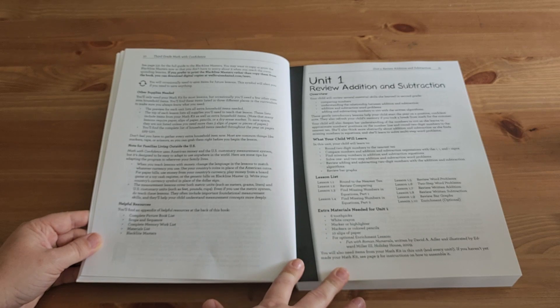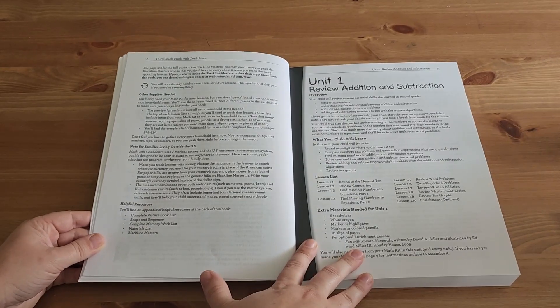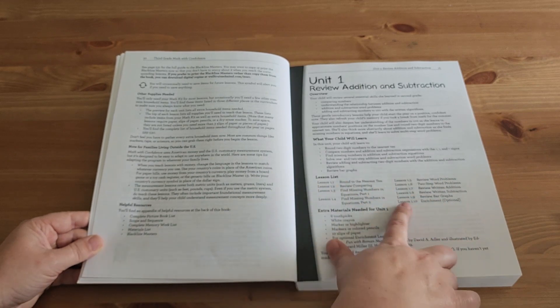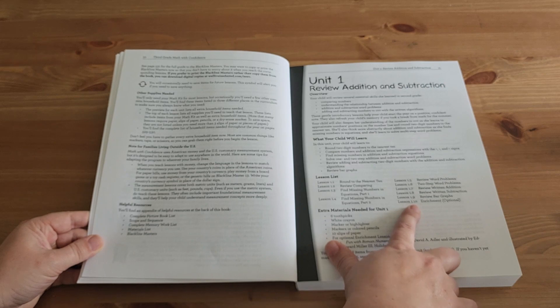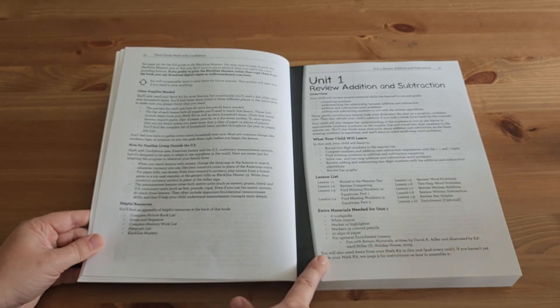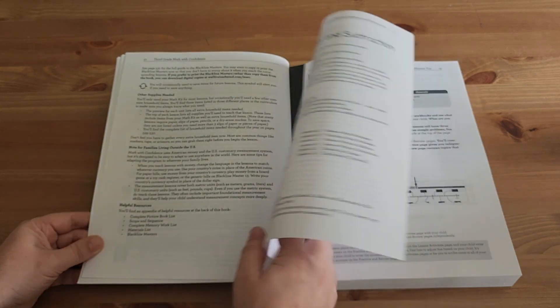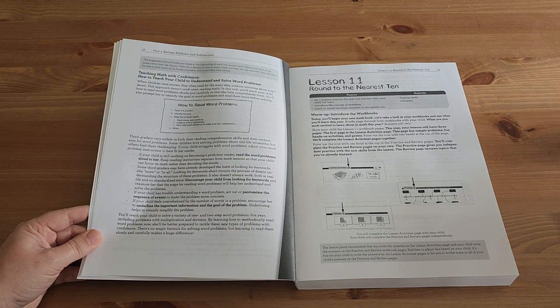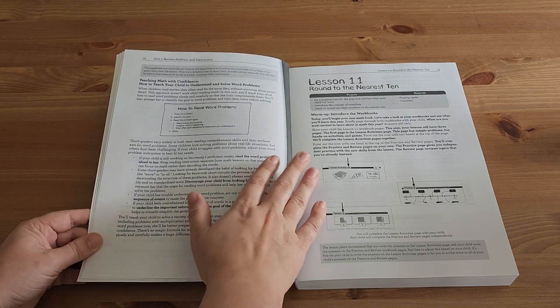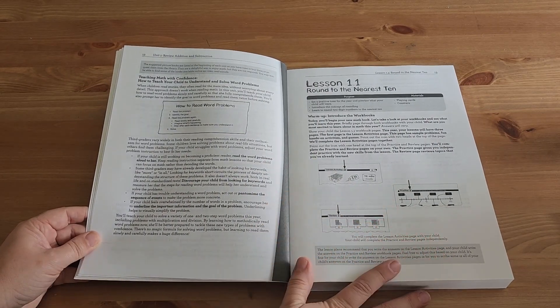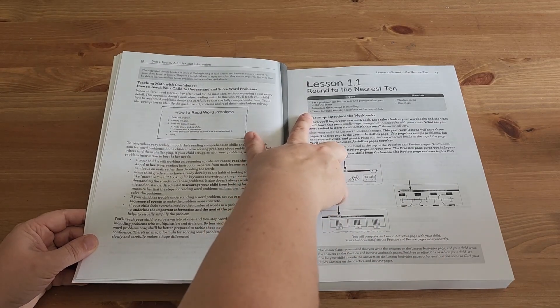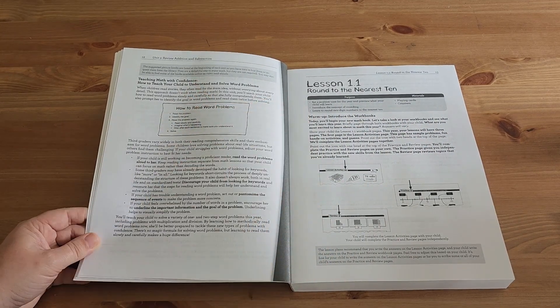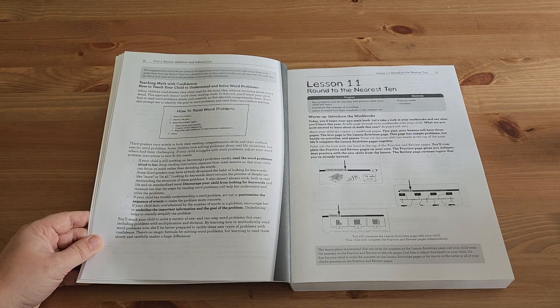And then it gets right into unit one. So this gives a very good overview of the unit and what your child will learn. And then here is the lesson list. So you can see that there are 10 lessons and that's including the enrichment in unit one and any kinds of extra materials that you might need for unit one. It also gives a little bit of background of how to teach your child to understand and solve word problems. And then it gets right into lesson one of unit one.